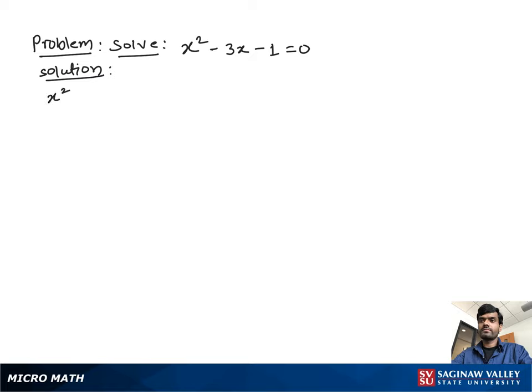Solve x squared minus 3x minus 1 equal to 0. It is a standard form of quadratic equation.